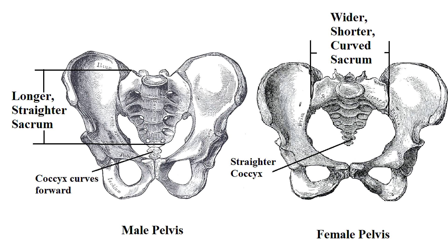As we look at the sacrum of the female pelvis, we'll notice that it's shorter, wider, and has a greater curve, whereas the male sacrum is going to be thinner, longer, and less curved on average. And the coccyx bone of the male curves a little more toward the front of the body in comparison to the female's coccyx bone.